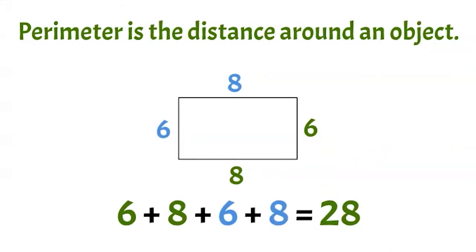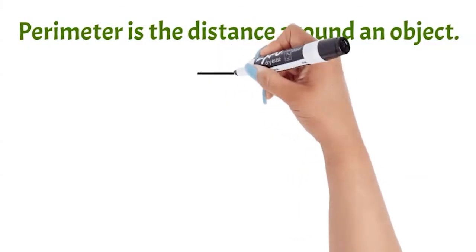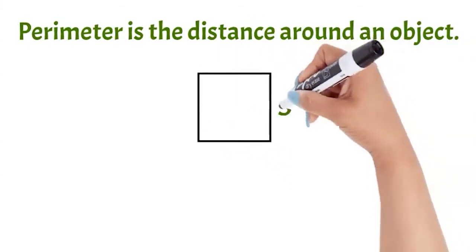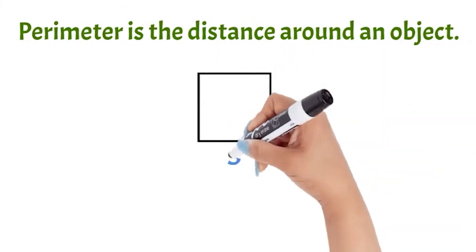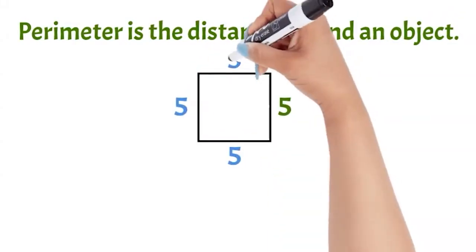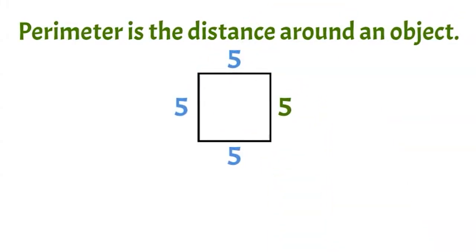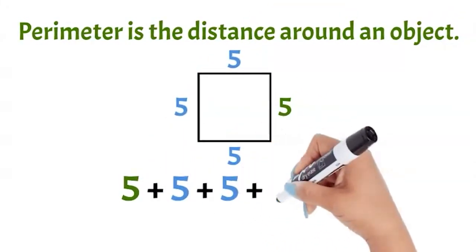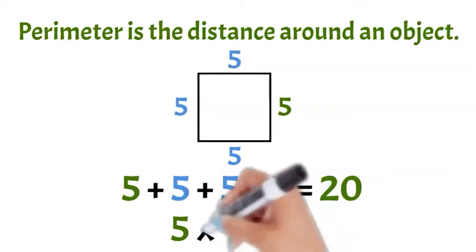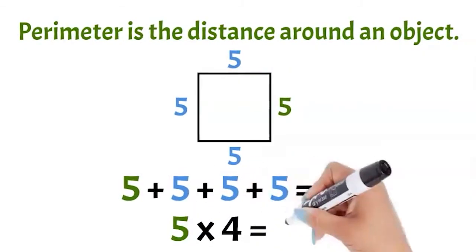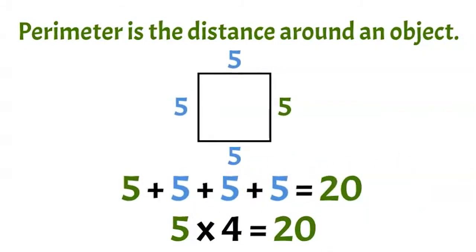This rectangle has a perimeter of 28 units. Remember that squares and rhombuses are special quadrilaterals that have four equal sides. This square has a side length of 5, so we can just add up 5 four times, or we can multiply the side length by 4. Either way, we get a perimeter of 20 units.